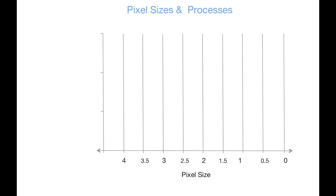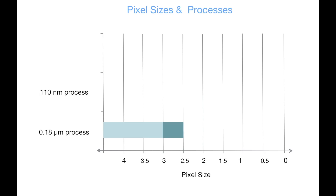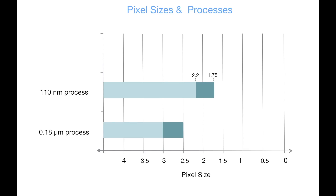What pixel sizes can you have in each type of process? For the 0.18 micron node you can take the pixel size down to 3 microns and maybe a little bit below, but at those sizes the image performance tends to suffer. In the 110 nanometer node you can take the pixel size down to 1.75 microns, but I wouldn't expect great imaging performance at that size — in that node I would recommend staying above 2.25 microns.